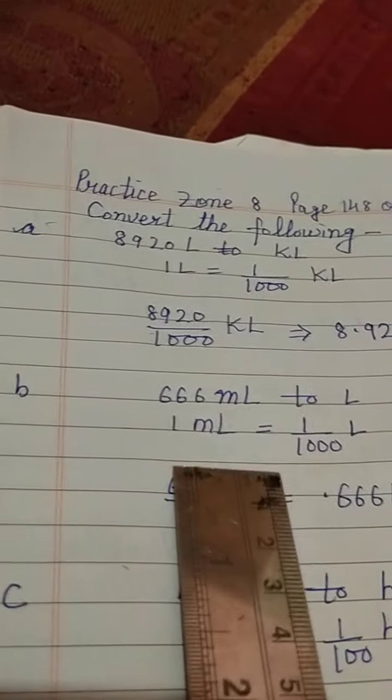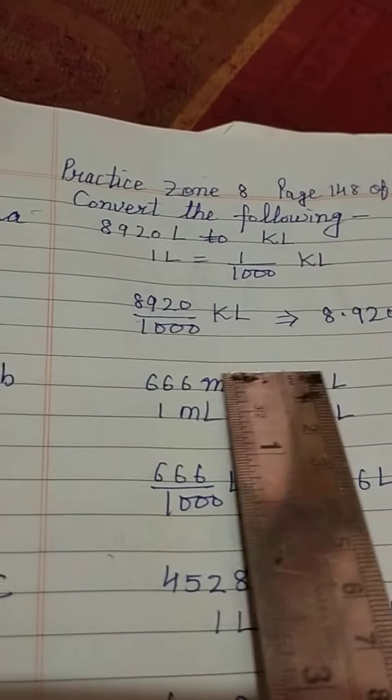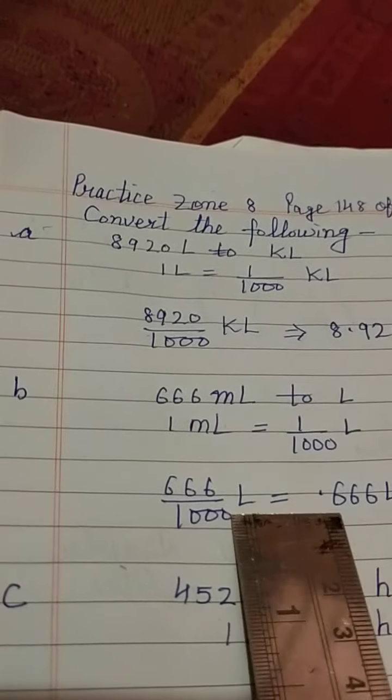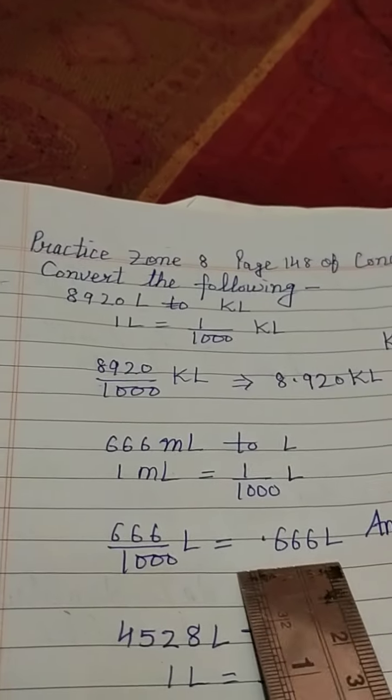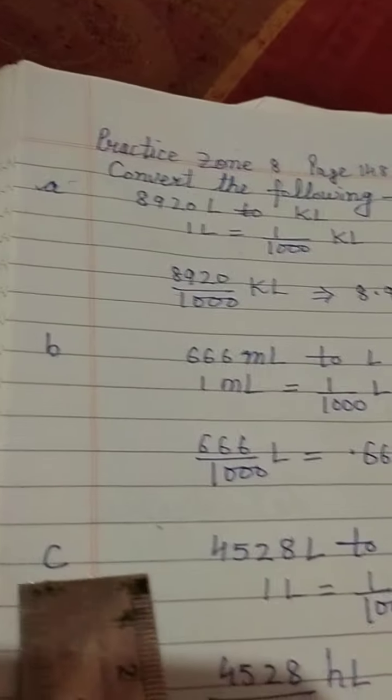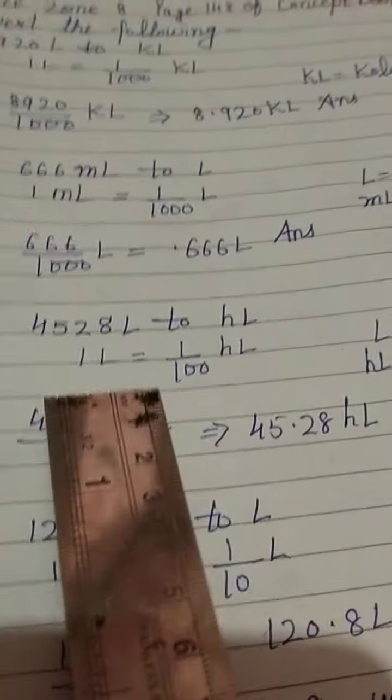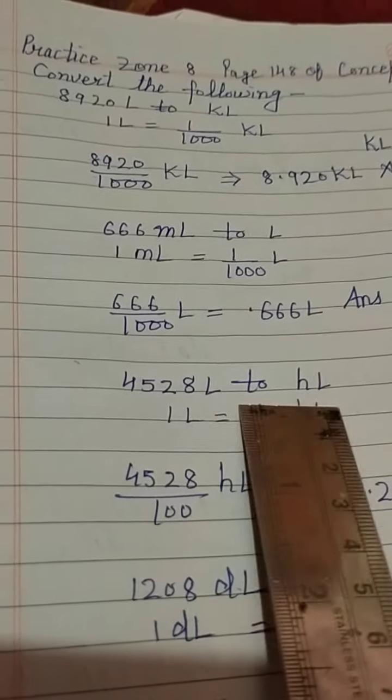So 666 divided by 1000 litre. In place of millilitre we will put 1 by 1000 litre. So again we will use decimal, 3 zeros means decimal 0.666 litre is our answer. Next is part C: 566 litre.